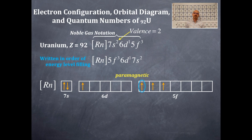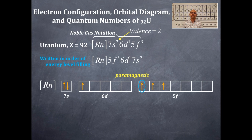We're going to circle an electron and get a set of four quantum numbers: N, L, M sub L, M sub S, for that particular electron circled in blue. The N value is the 5 in the 5F, so N equals 5. The L value is the type of orbital — S is 0, P is 1, D is 2, F is 3 — so the L value is 3.